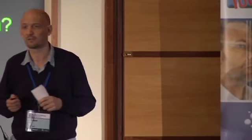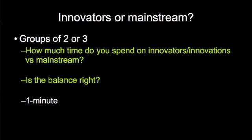So, should we be focusing on the leading edge or the trailing edge? Children, into groups. You have a minute at the most, in groups of two or three, to think about how much time that you and your institutions spend on the innovators and how much time you spend on the mainstream and have you got the balance right. Off you go.